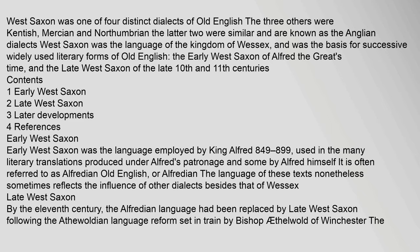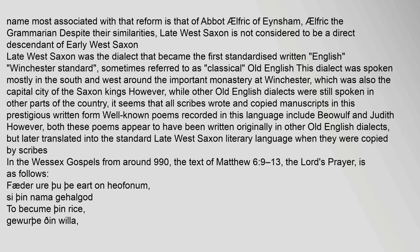By the 11th century, the Alfredian language had been replaced by Late West Saxon, following the language reform set in train by Bishop Aethelwold of Winchester. The name most associated with that reform is that of Abbot Ælfric of Eynsham, Ælfric the Grammarian. Despite their similarities, Late West Saxon is not considered to be a direct descendant of Early West Saxon. Late West Saxon was the dialect that became the first standardized written English — the Winchester standard — sometimes referred to as Classical Old English. This dialect was spoken mostly in the south and west, around the important monastery at Winchester, which was also the capital city of the Saxon kings.